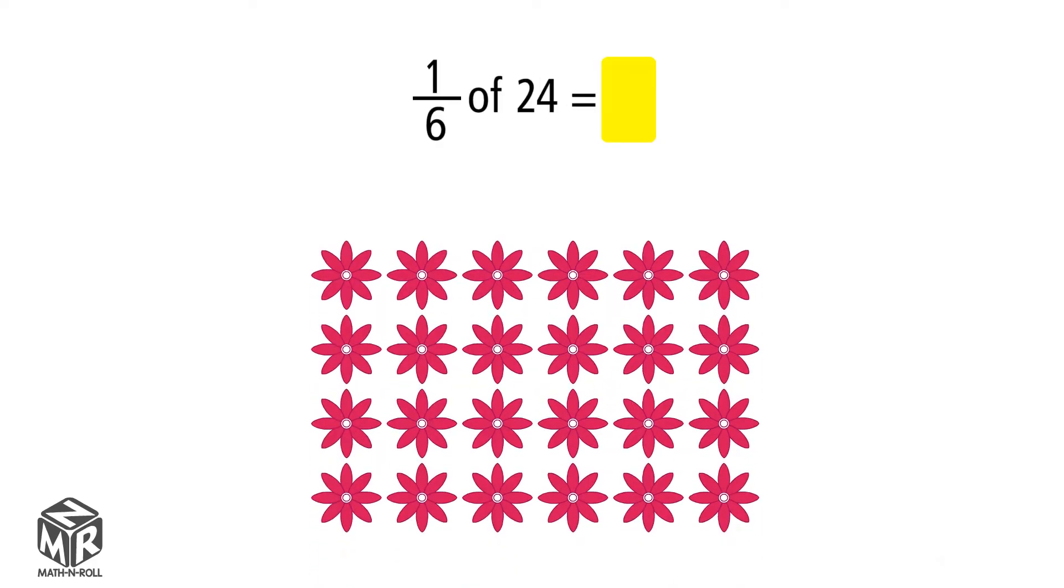Let's try another example. We need to find one-sixth of 24, so we need to have six equal groups.